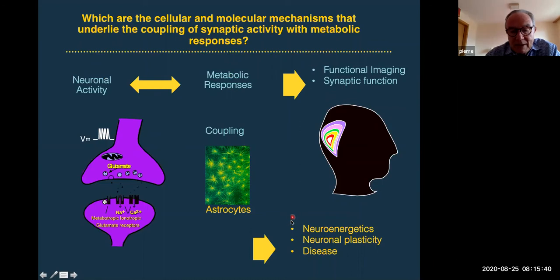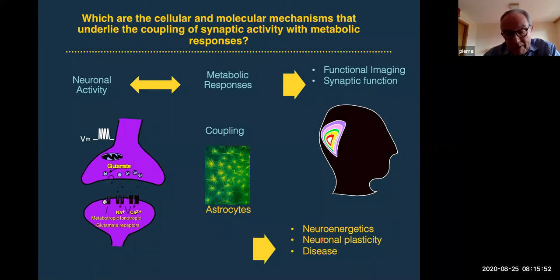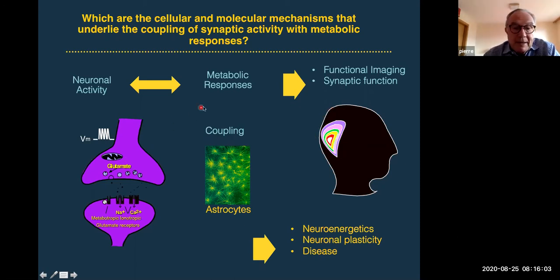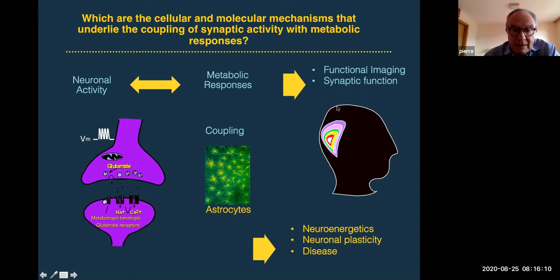This coupling has a number of points of relevance with several questions: one about neuroenergetics, which is probably the main topic of our conversation today; about neuronal plasticity, which I will not say much about today; and also on disease. Another point is that this coupling between synaptic activity and metabolic responses, and in fact also vascular responses, is key to produce the signals that are detected with functional brain imaging techniques.